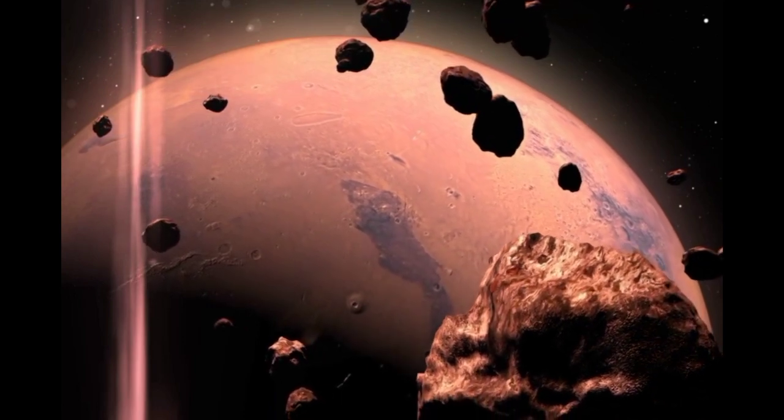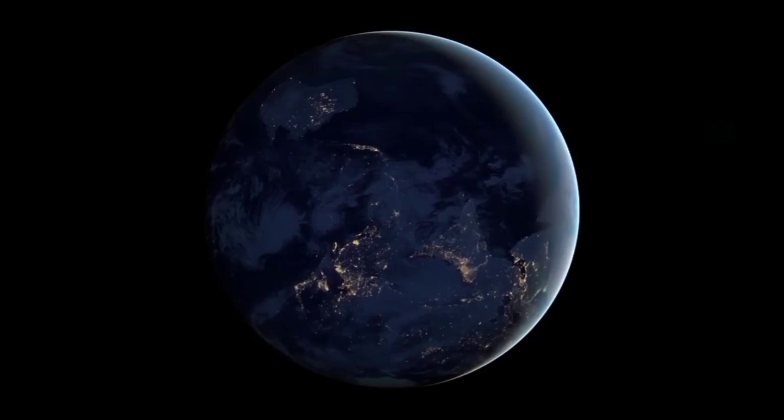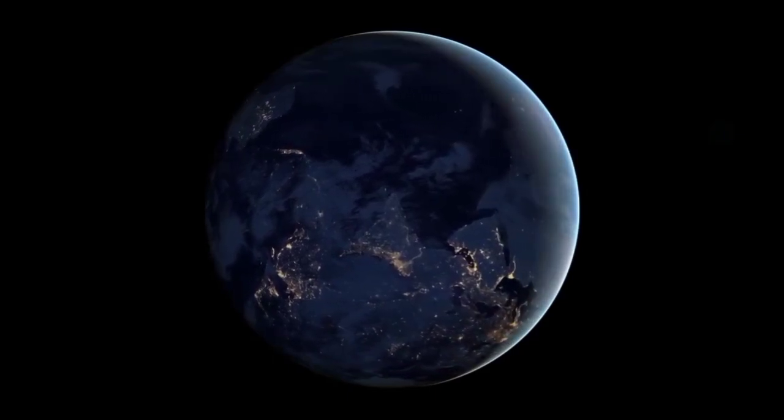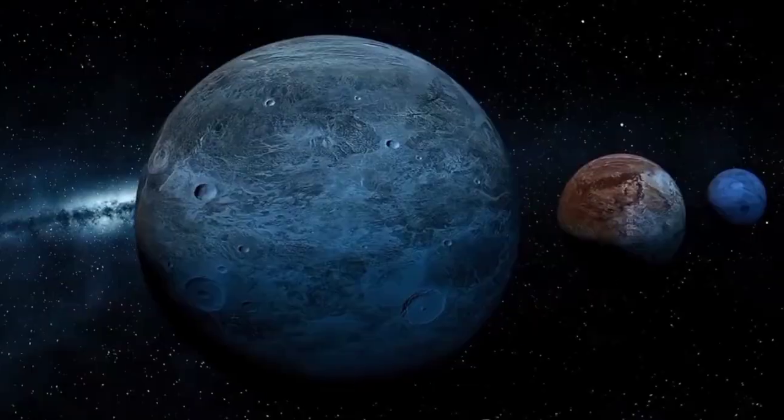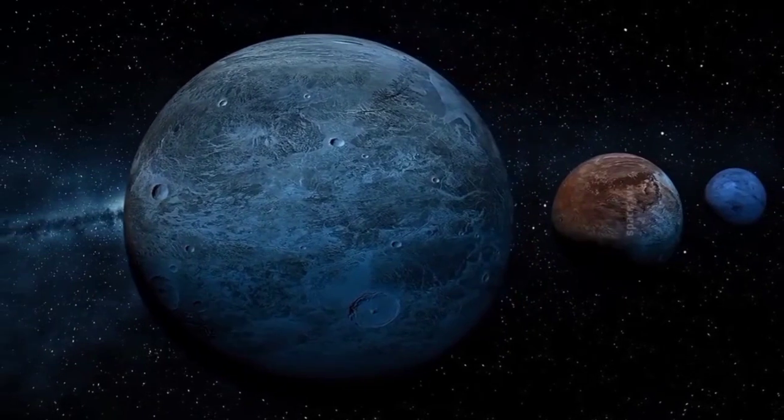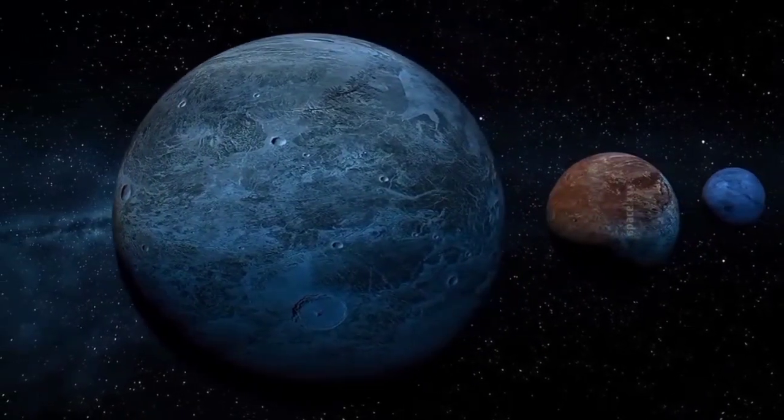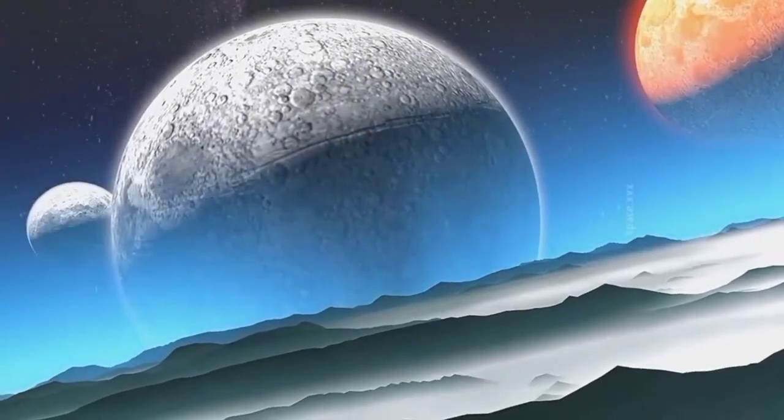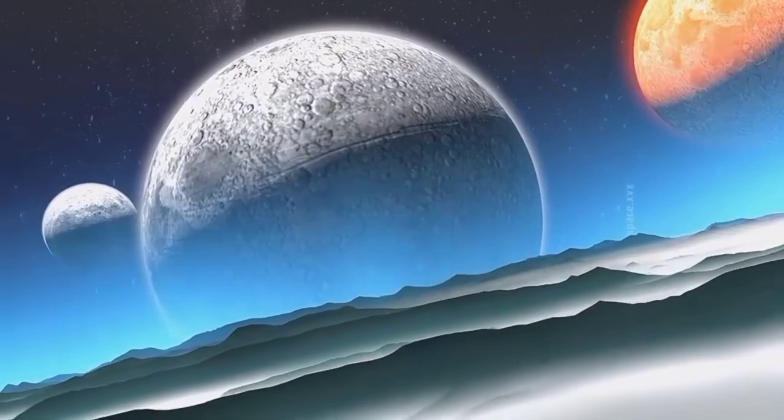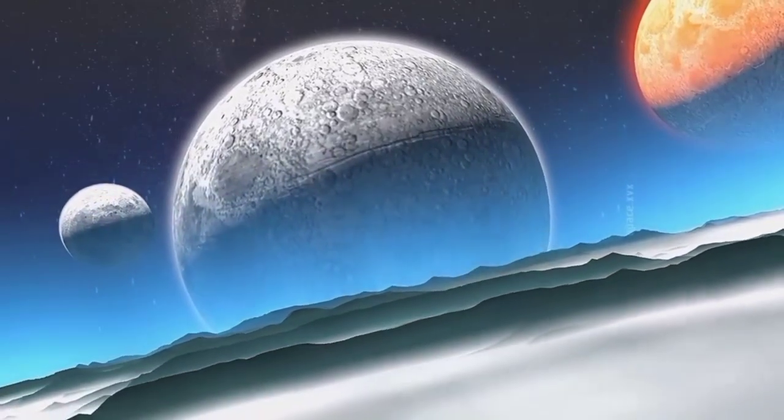Yet, it's not as hospitable as it might seem. Proxima b is bombarded by intense ultraviolet radiation from its star, much stronger than the radiation we receive from our Sun. This radiation is so extreme that even the lightest particles of hydrogen, nitrogen, and oxygen are stripped away.